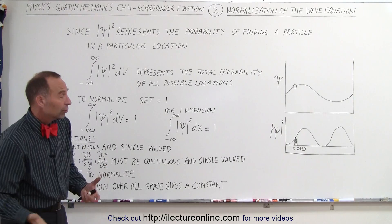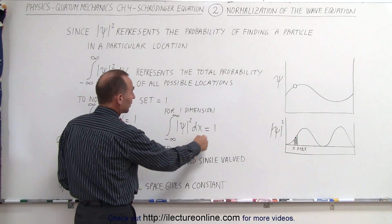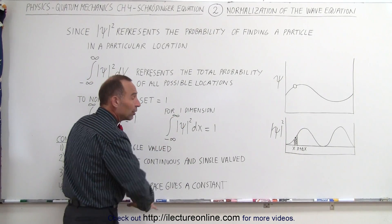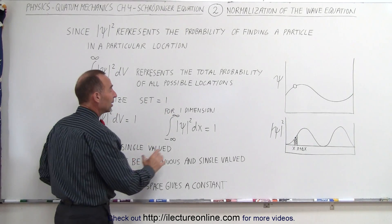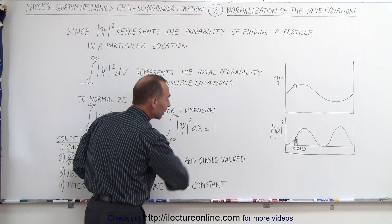If you do this for a single dimension, for example the x dimension, it simply becomes equal to this. Instead of integrating over the whole volume of space, we're simply integrating over a single dimension.